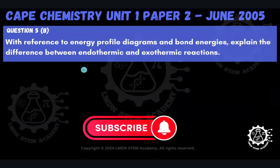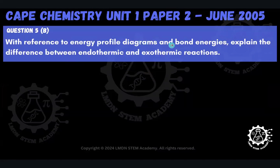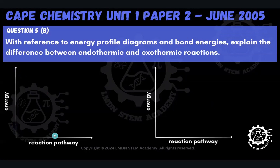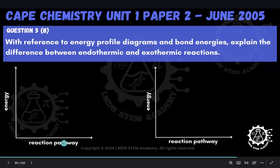Part B says: with reference to energy profile diagrams and bond energies, explain the difference between endothermic and exothermic reactions. So there are two things that need to be accomplished in our answer here — we have to draw energy profile diagrams, and within that, we have to show this idea of bond energies. So here I have two graphs with energy on the y-axis and reaction pathway on the x-axis.